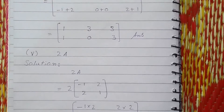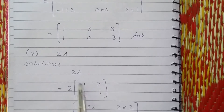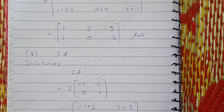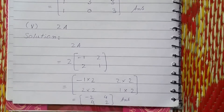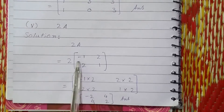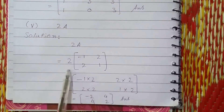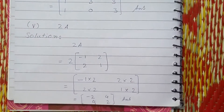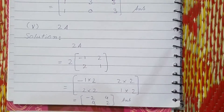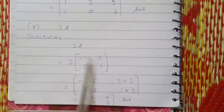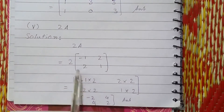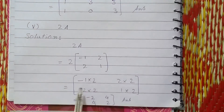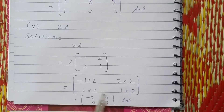Part 5: 2A, that is 2 times A. There is 2 and this is the value of A. Now I am going to multiply all the elements of A with 2. So 2 ones are 2, 2 minus 1s are minus 2, 2 twos are 4, 2 twos are 4, 2 ones are 2.